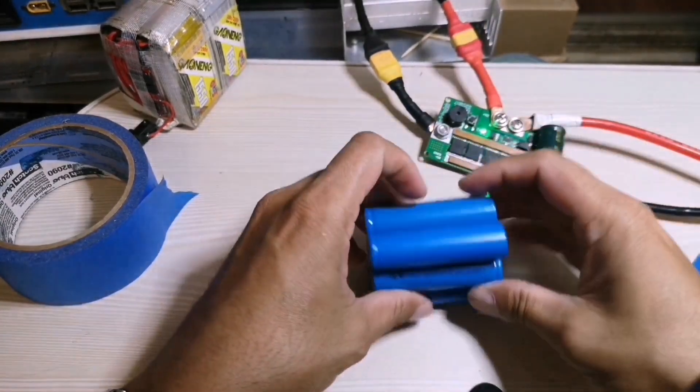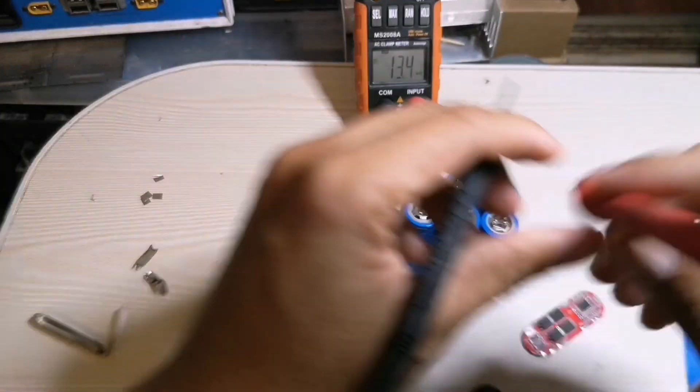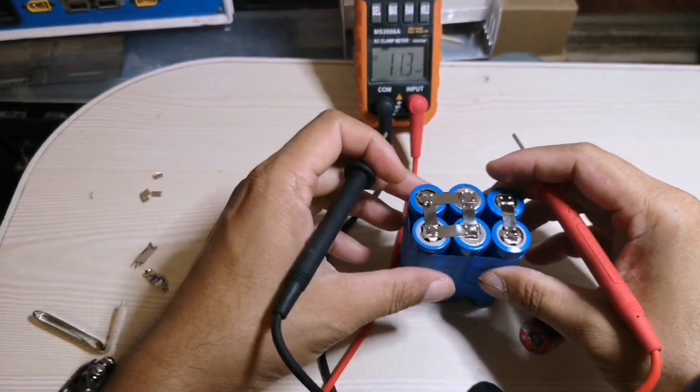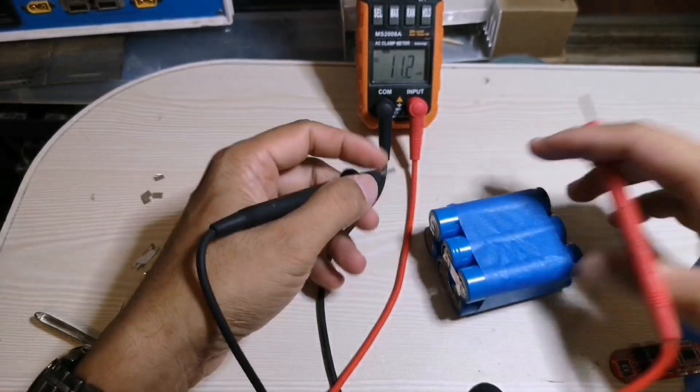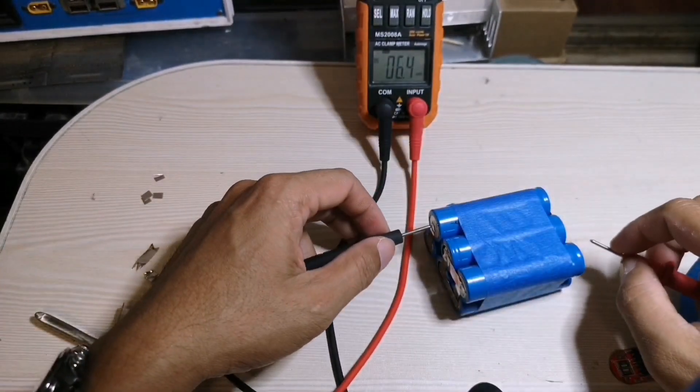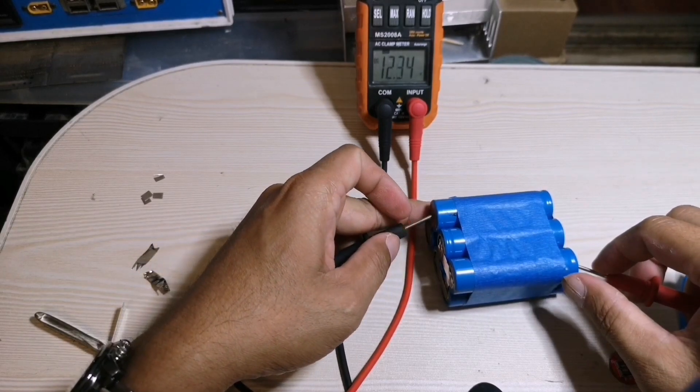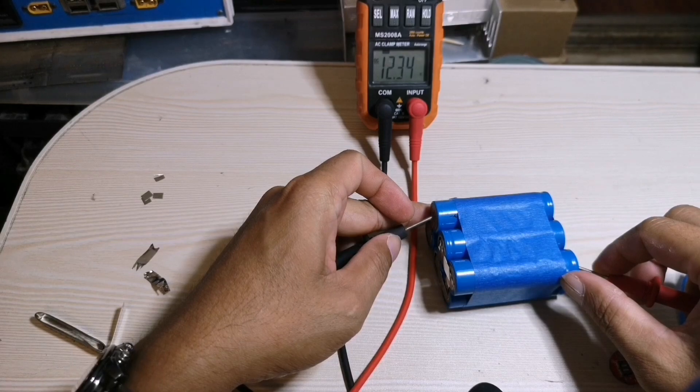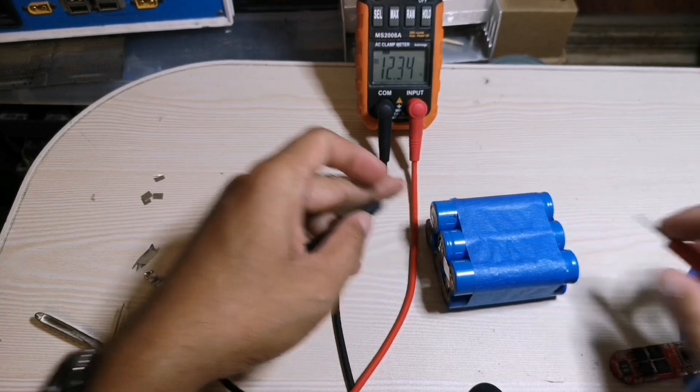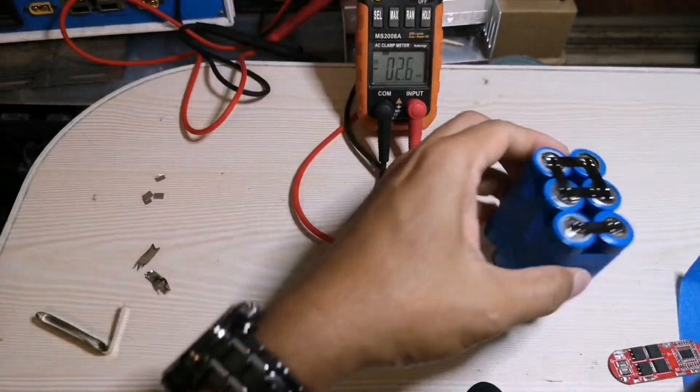Now we're done. Before installing the BMS, I need to check the voltage to confirm this is 12 volts. Okay, it's 12 volts, 12.34, so then I can proceed to install the BMS.